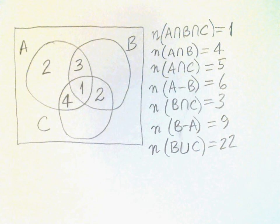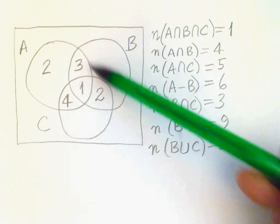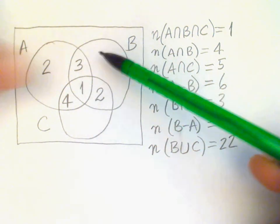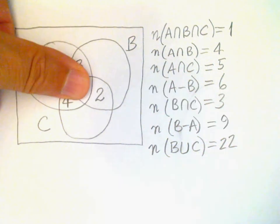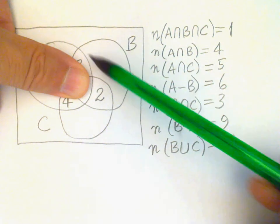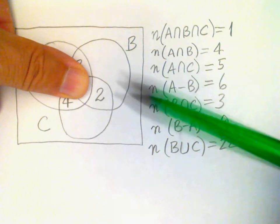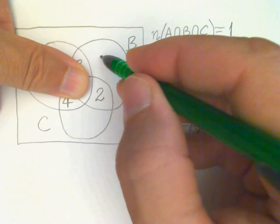B minus A is 9. Where is B minus A? Well, it's that part of B not overlapped by A. So that's here. Again, I'll put my thumb over A so it's easier to see. Okay, so that part of B which is not in A is here. And if this has 9 in it, this has 2. That means this must be 9 minus 2 or 7.